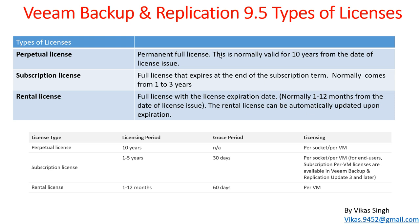The second type is subscription licenses, which are full licenses that expire after a subscription term — normally one to three years. For example, if you bought in 2018 for one year, it expires in 2019 and you need to renew. The third type is rental licenses, which have an expiry date typically ranging from 1 to 12 months from the date of issue.